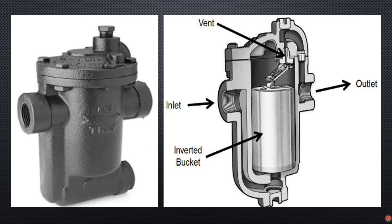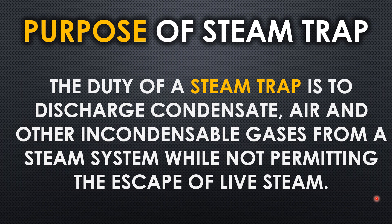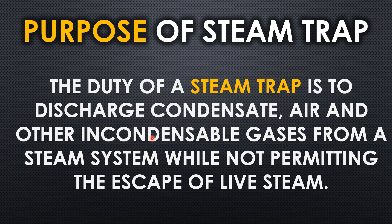This is what a steam trap looks like — it has an inlet and an outlet. The condensate from the steam header goes into the steam trap, and when the trap is filled with condensate, it allows the condensate to pass through. The purpose of the steam trap is to discharge condensate, air, and other non-condensable gases from the steam system while not permitting the escape of live steam. It allows condensate to drain but prevents steam from passing through.